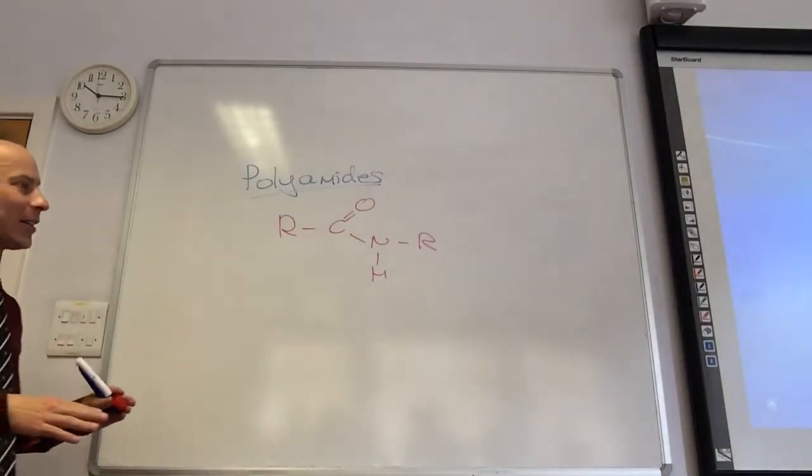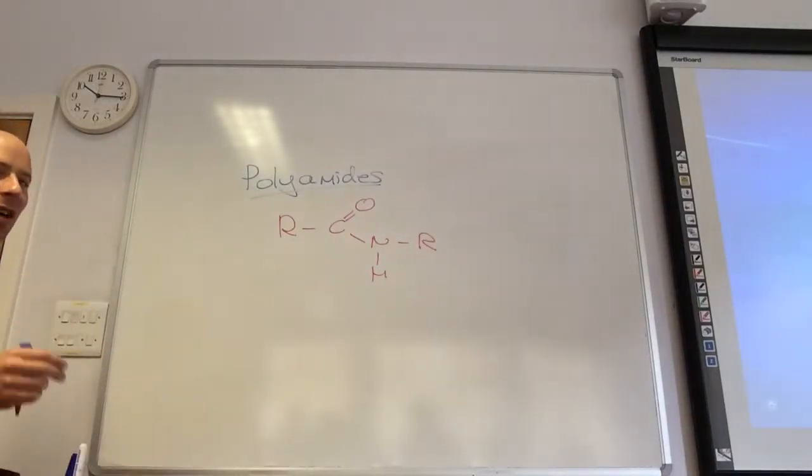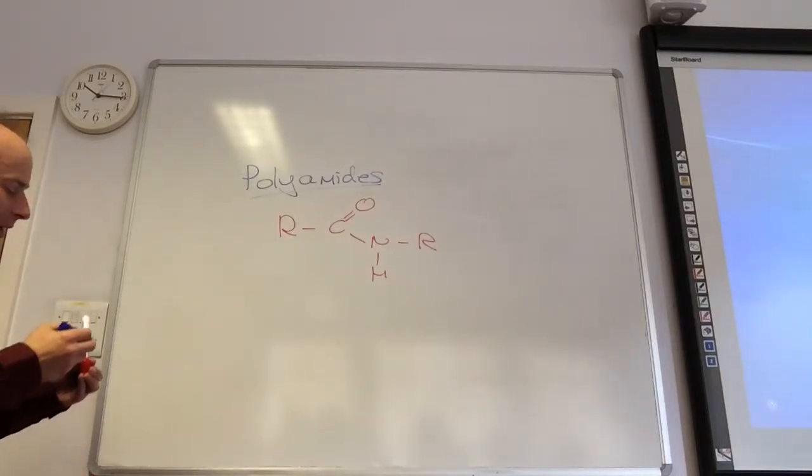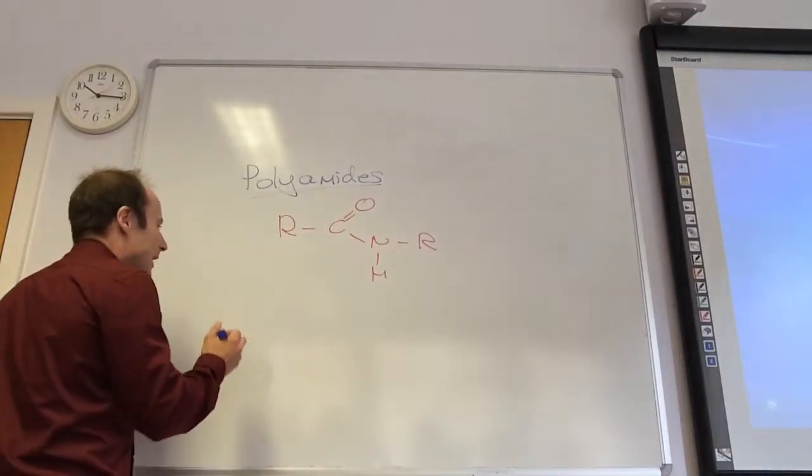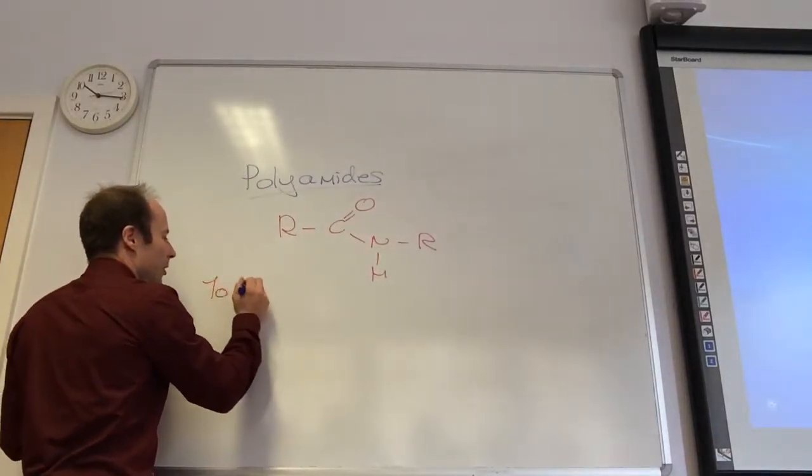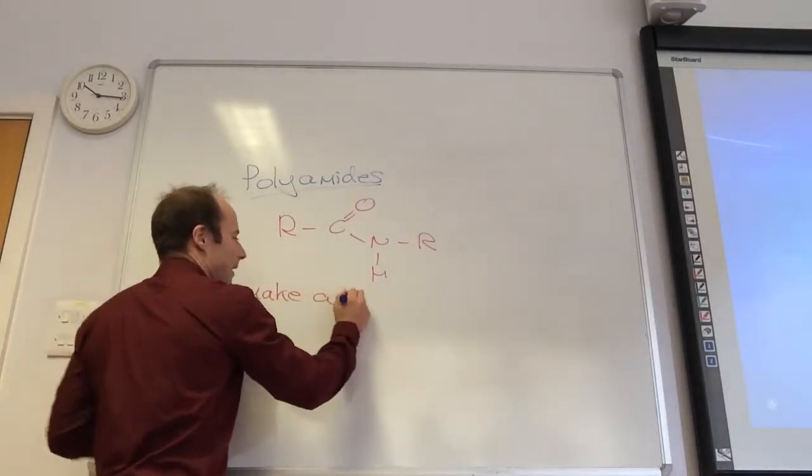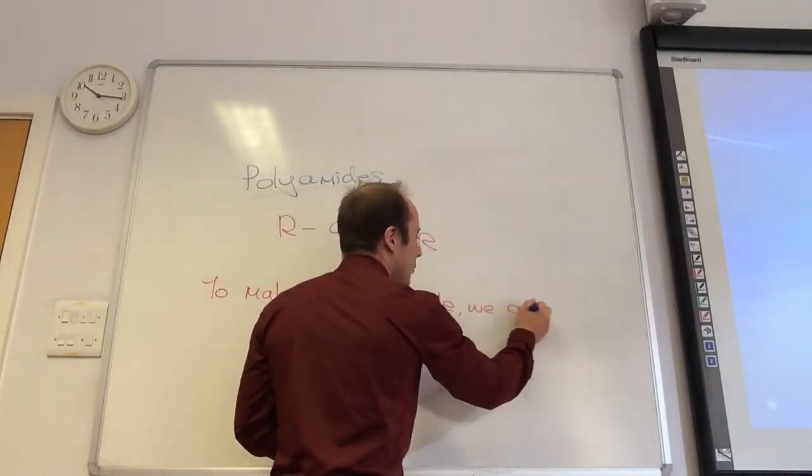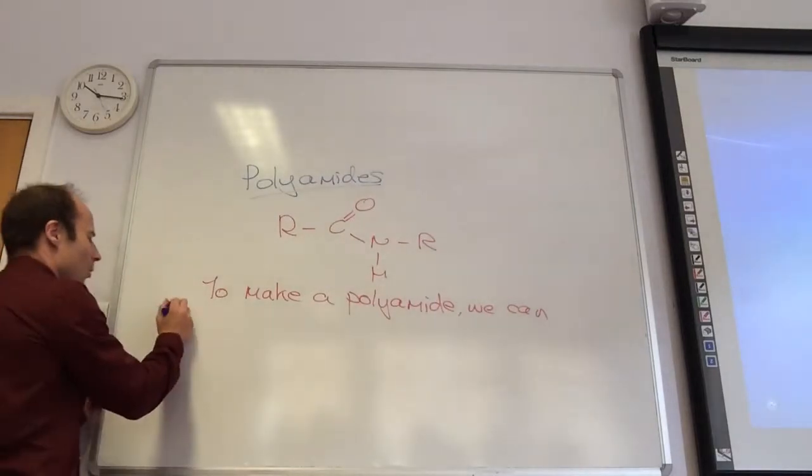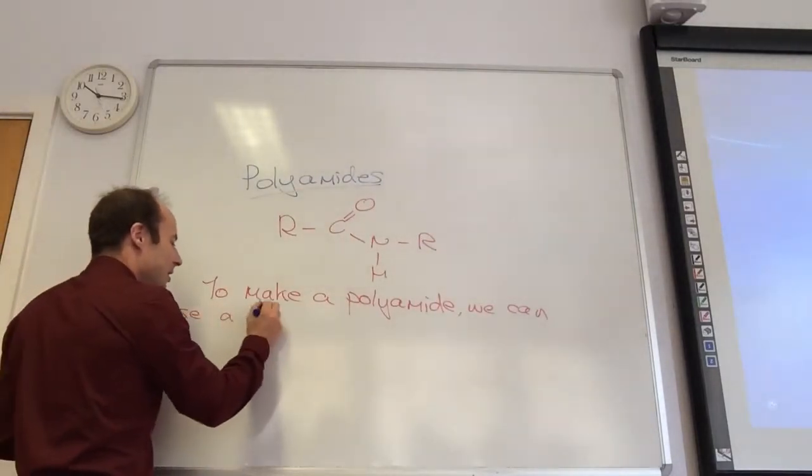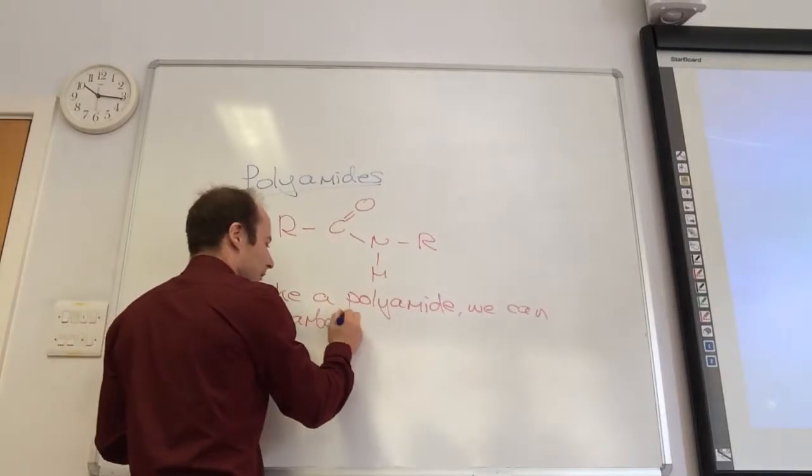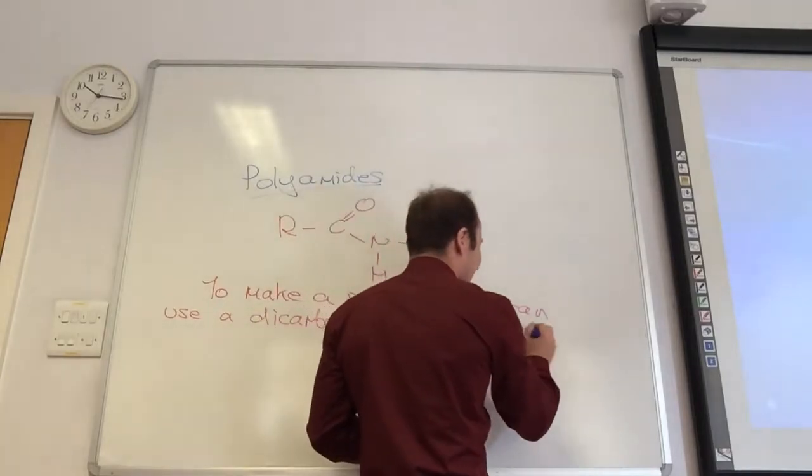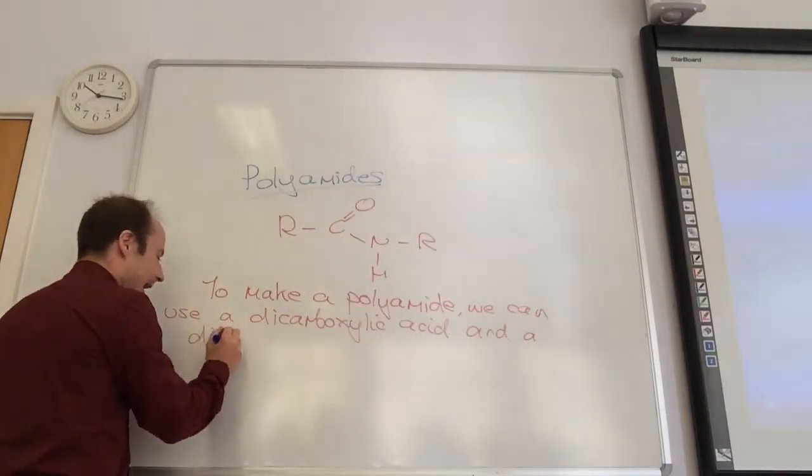In order to start with that, I'm going to start with a diacid and a diamine, and we're going to link them all up together. To make a polyamide we can use a diacarboxylic acid, similar to polyesters, and a diamine.